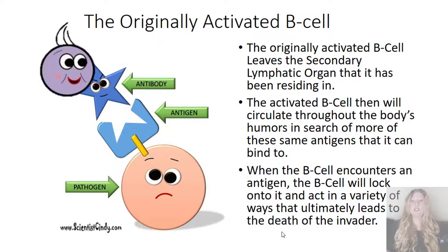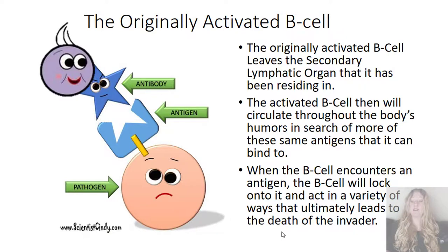Also, the originally activated B cell can leave the secondary lymphatic organ that it has been residing in. The activated B cell will then circulate throughout the body's humors in search of more of the same antigens that it can bind to. When the B cell encounters an antigen, the B cell will lock onto it and act in a variety of different ways that ultimately will lead to the death of the invader.